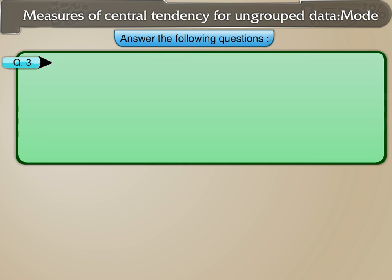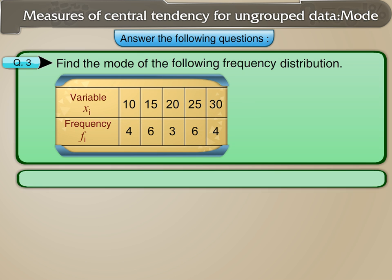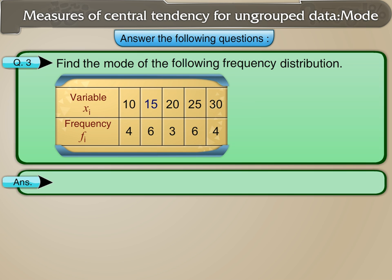Question 3: Find the mode of the following frequency distribution. The values 15 and 25 both have the maximum frequency of 6. Hence, 15 and 25 are both modes of the distribution.